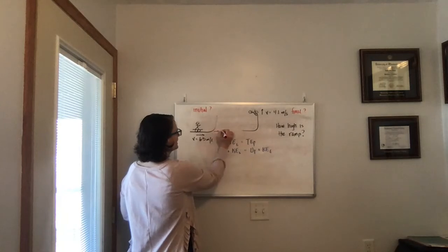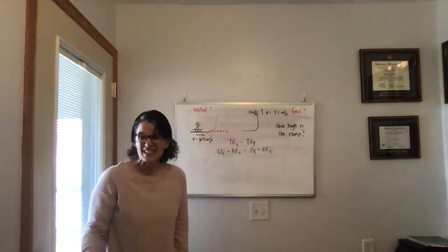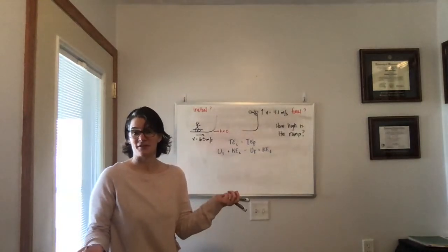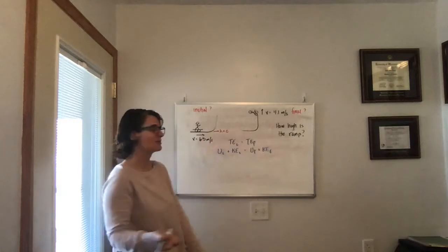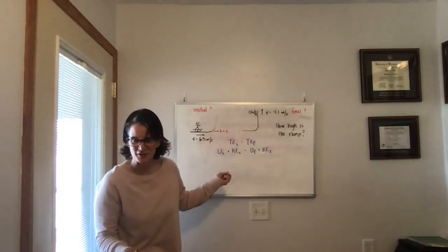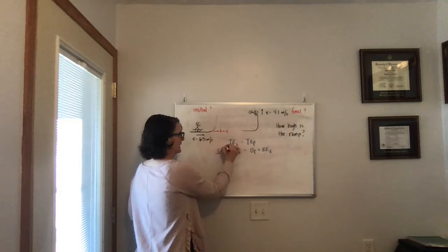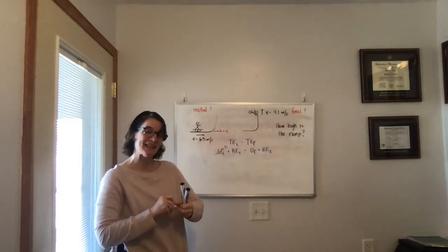And a lot of times, strategically, we want to knock out one of the variables that we have to solve for. So if I make my height equal to zero when she enters the ramp, then her initial potential energy is zero. And that value conveniently goes away. So we always want to try to be strategic about where we place that reference value of zero.